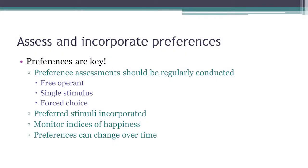Identifying preferences should be the first step of any function-based assessment — looking at what does this individual like and what are the conditions under which they do well. So when you're getting a referral about a child having problem behavior and all of the conversation is about that problem behavior, you need to balance that with what are the situations under which they do well? What do they love? When do they smile? When do they laugh? That is just as important.